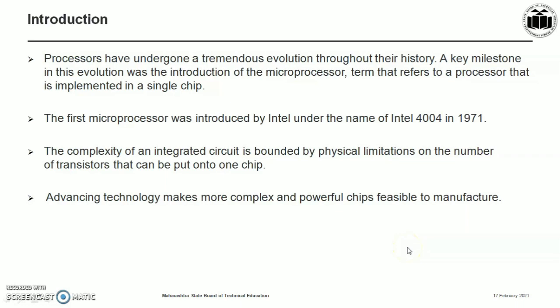Processors have undergone a tremendous evolution throughout their history. A key milestone in this evolution was the introduction of the microprocessor — a term that refers to a processor implemented on a single chip. The first microprocessor was developed by Intel under the name 4004 in 1971. It contained about 2,300 transistors.